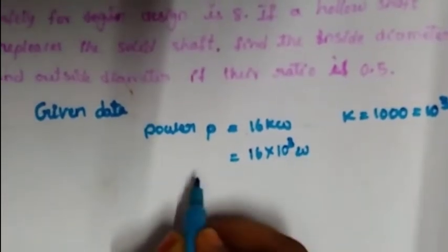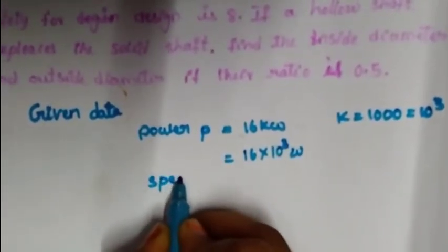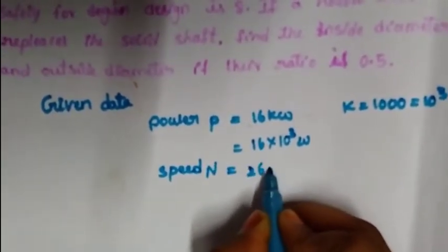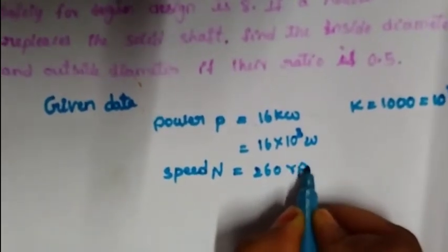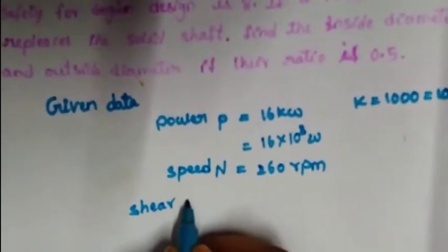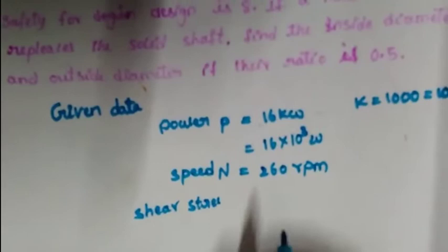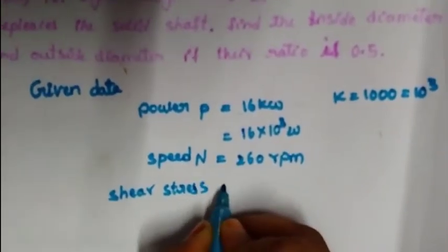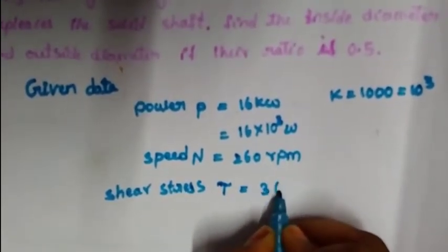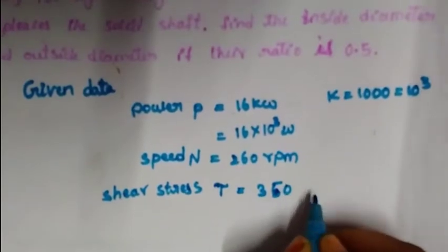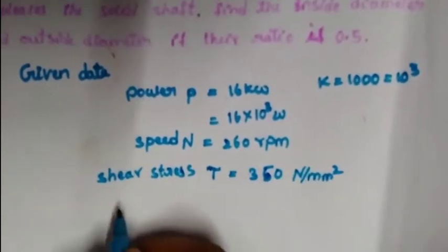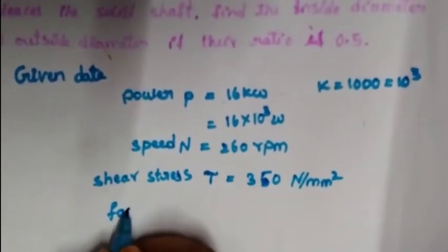Next, speed N is equal to 1260 rpm. Shear stress is equal to 350 rpm.